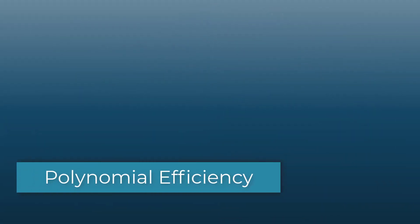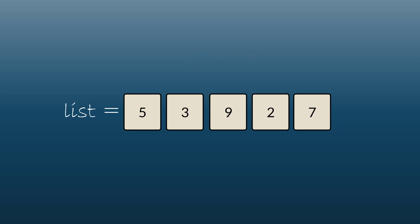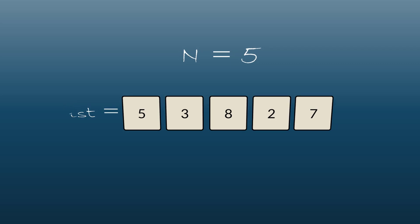When we talk about algorithmic efficiency, we talk about it in terms of input size. Imagine a list with five items: 5, 3, 9, 2, and 7. The input size n is five. Say we have an algorithm that checks whether the number nine is in the list. If nine is not in the list, we have to look through all five items — all n items — so this does n checks.